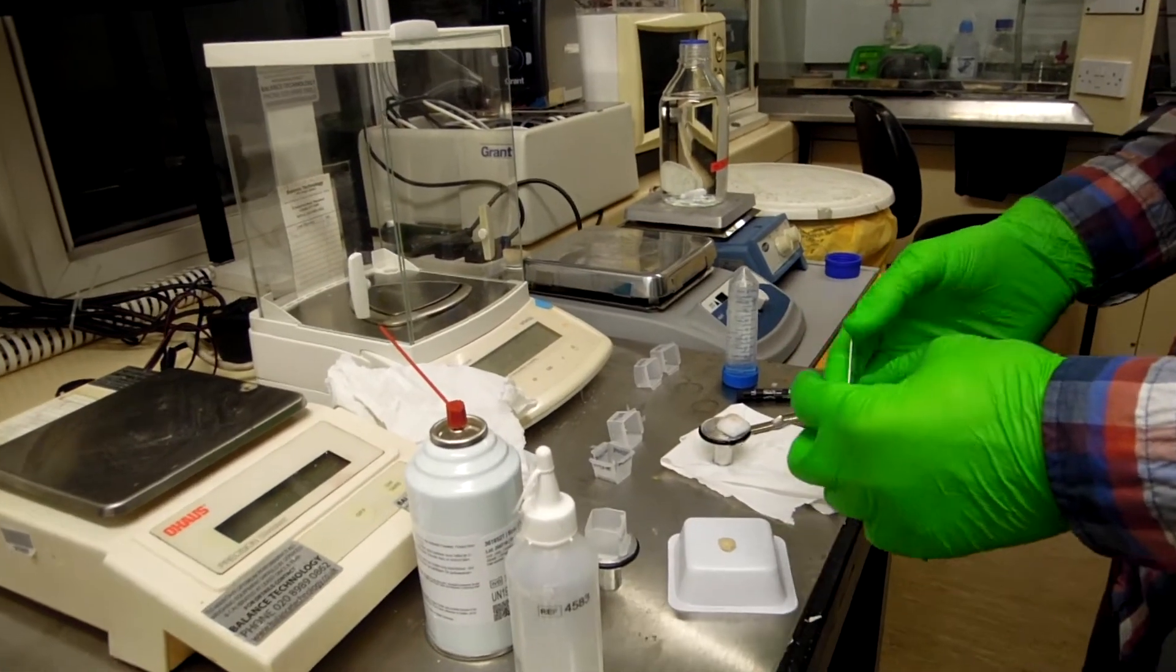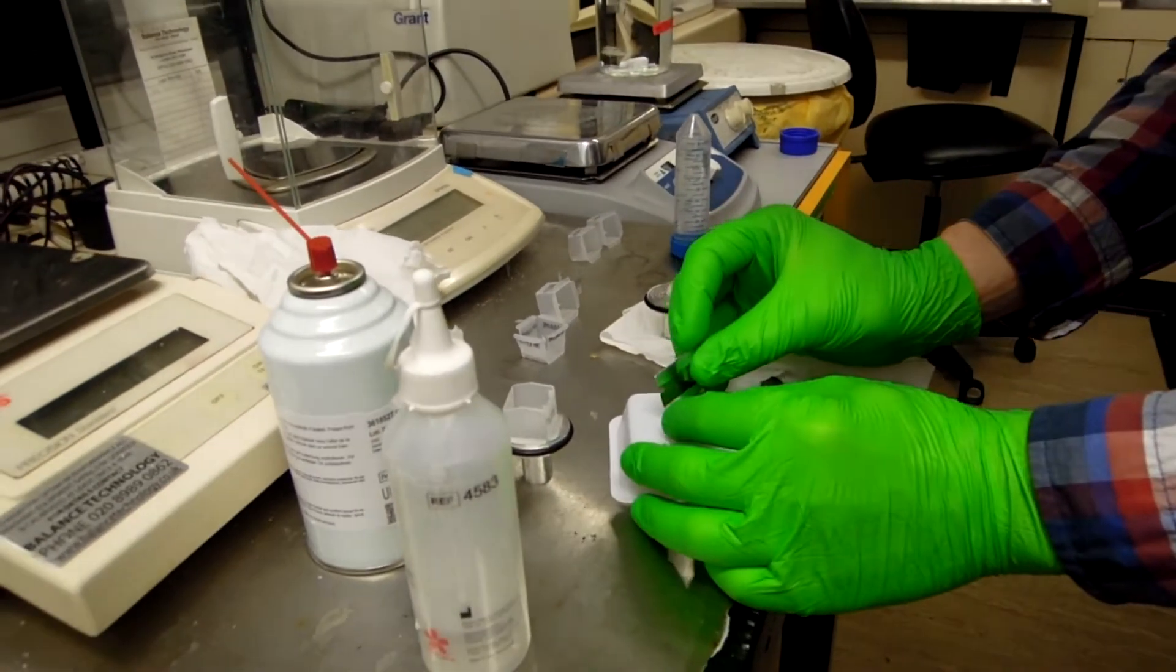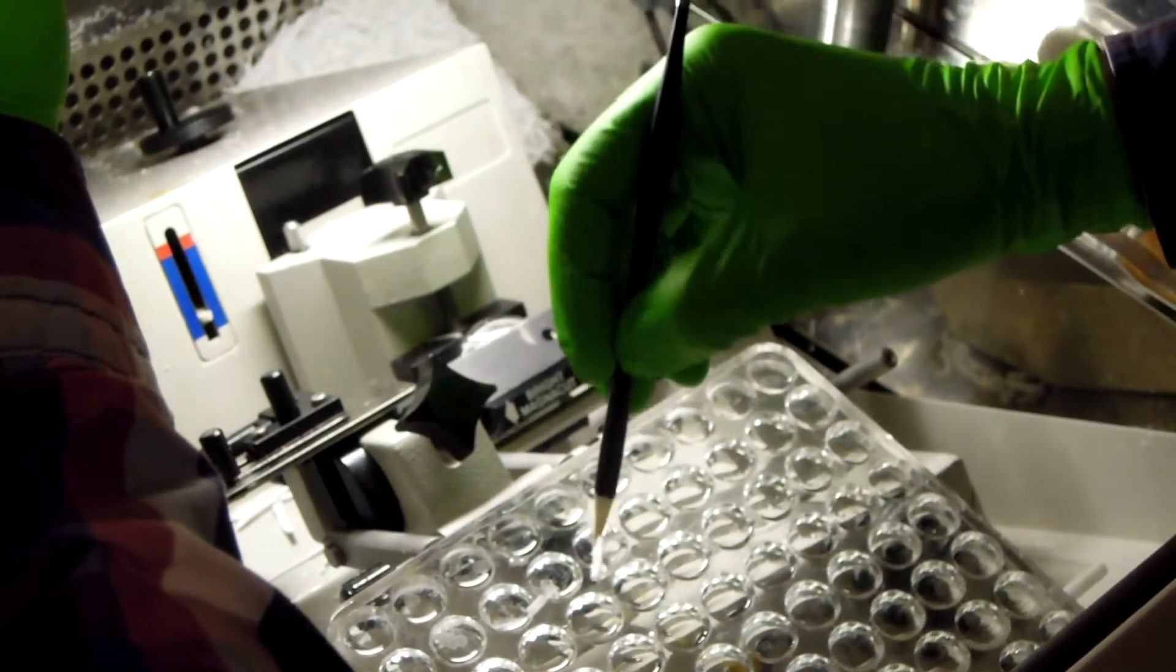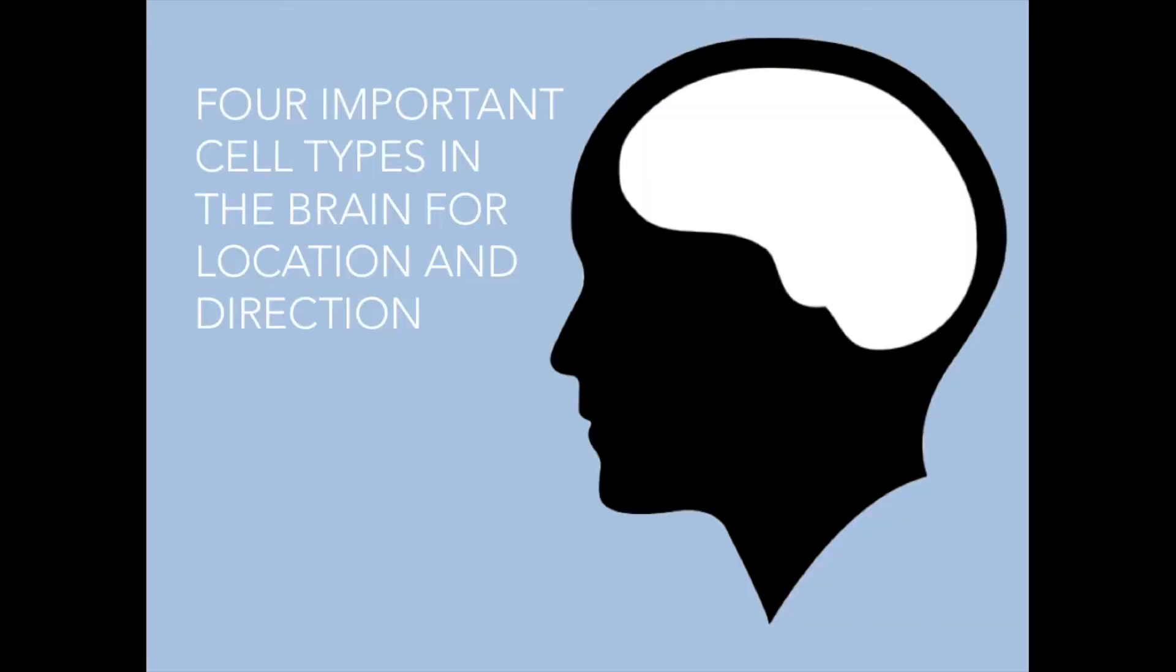Most experimental research on spatial navigation and memory is done in rats. Through implants in their brains, we can record the activity of a single cell. In the brain, there are four important cell types that encode location and direction.